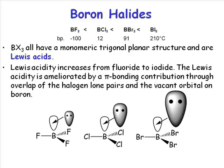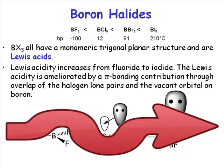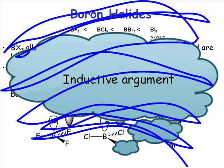All of these boron halides have different Lewis acidity, and the trend observed is not perhaps the one that would first be intuitive. If we consider the electronegativity of the halide atoms, fluorine is the most electronegative, so it has the strongest negative inductive effect, pulling electron density away from the boron. You might therefore expect boron trifluoride to be the strongest Lewis acid and boron triiodide to be the weakest. But if you do the measurements, it's not the case — the trend is in the opposite direction. Boron triiodide is the strongest Lewis acid and boron trifluoride is the weakest. A simple inductive argument doesn't explain this trend.